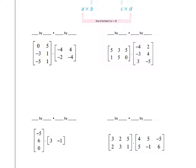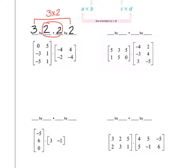In the first example, we have a matrix with 3 rows by 2 columns and one with 2 rows by 2 columns. So we have a 3 by 2 multiplied by a 2 by 2. The columns of the first matrix equal the rows of the second, so this multiplication is possible and the answer will be a 3 by 2 matrix. The second example has 2 rows by 3 columns and 3 rows by 2 columns — a 2 by 3 multiplied by a 3 by 2. The inner dimensions match, so the answer will be a 2 by 2 matrix.